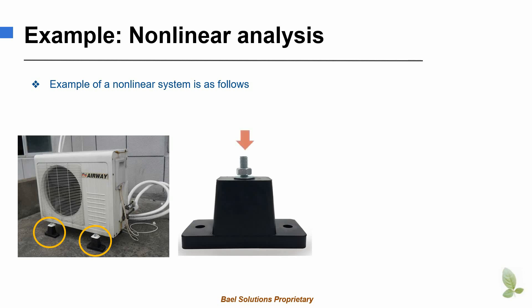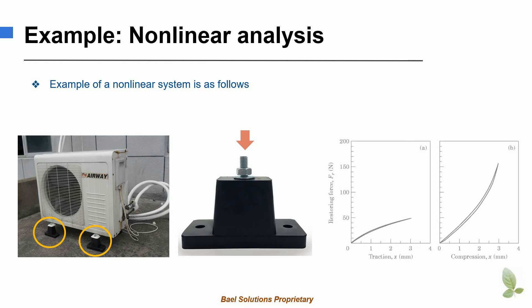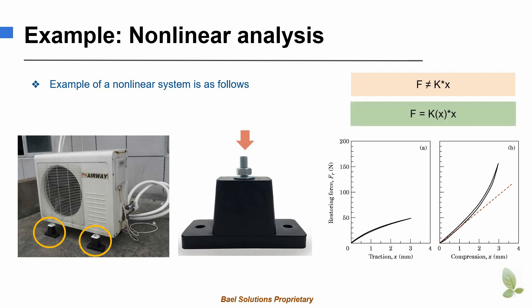If a force is applied on the rubber mount and the deformations are measured, the force-deformation curve we get is shown in the third picture. Note that we cannot write a single constant stiffness k for the entire range of deformations. The relationship between the load and the deformation is not linear. As the deformation increases, the stiffness of the structure increases. This phenomenon is known as stiffening. Stiffening of the rubber with deformation is one of the examples of a non-linear material behaviour.